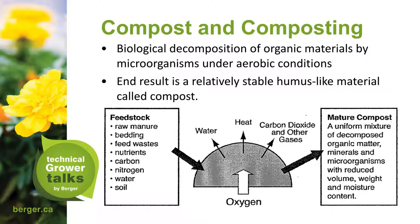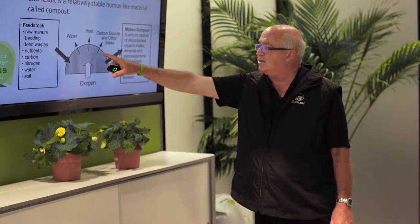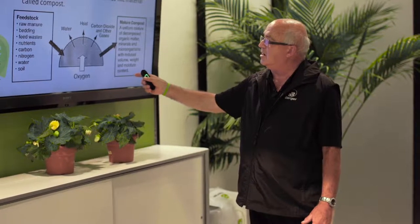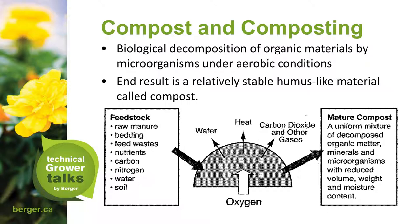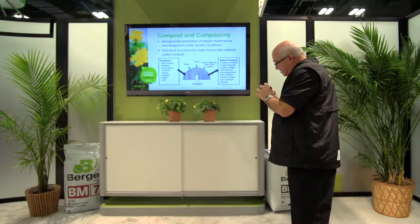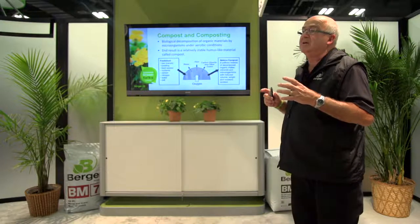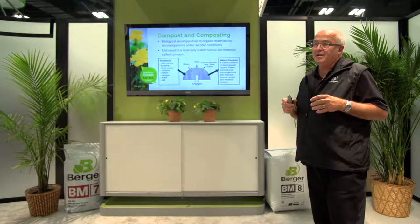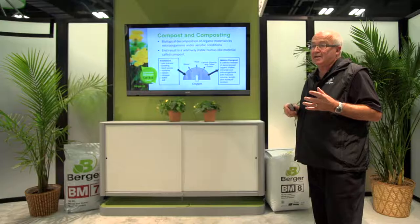The end result of composting is a relatively stable humus-like material. Energy has to go in, then we have our first set of degraders. Naturally, water, heat, and carbon dioxide are given off until we reach a mature compost — a uniform mixture of decomposed organic matter, minerals, and microorganisms. Like any type of mix, they have to meet specific standards and criteria before being sold as one of our organic OM line mixes.